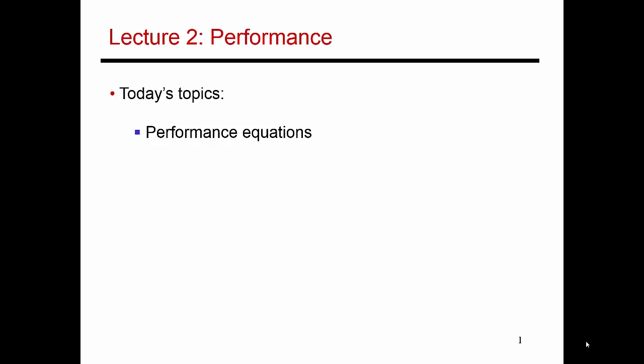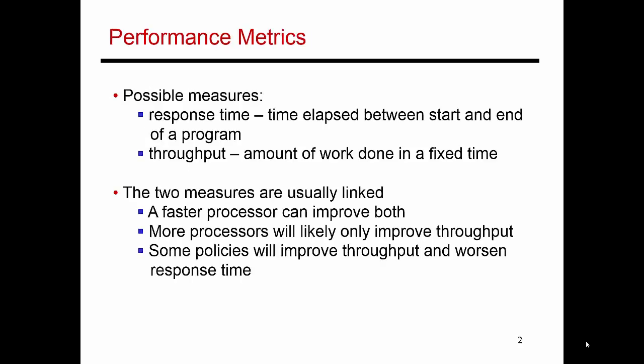In the next set of videos, I'm going to describe the equations that determine the overall performance of a system. So there are two primary measures for performance. One is response time and the other is throughput.